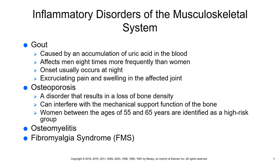Also assess for increased lordosis — increased curvature of the lumbar region — and scoliosis, which is lateral curvature of the spine. These terms and pictures are located at the end of this chapter. Also assess for gait impairments.